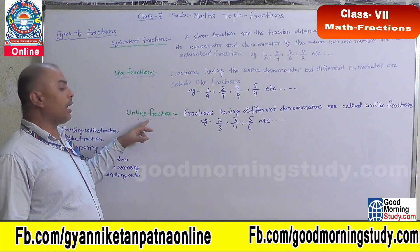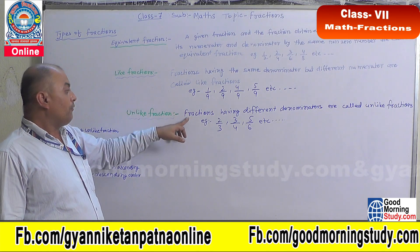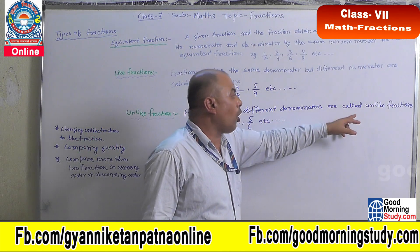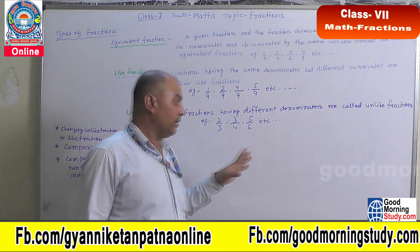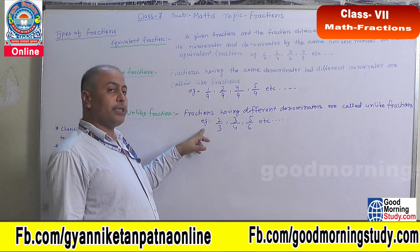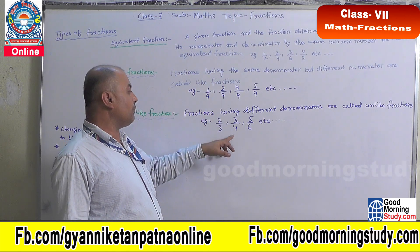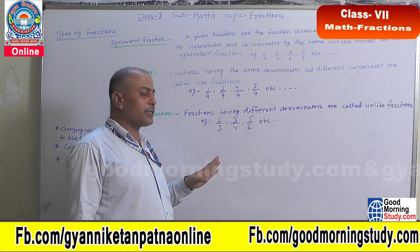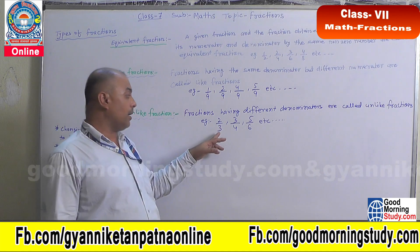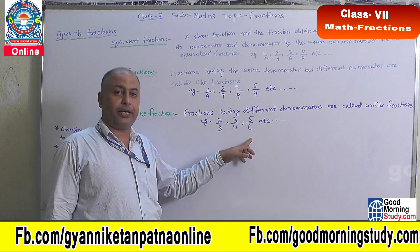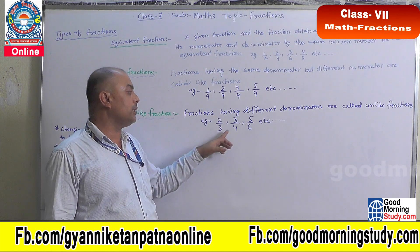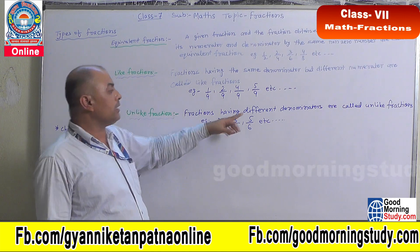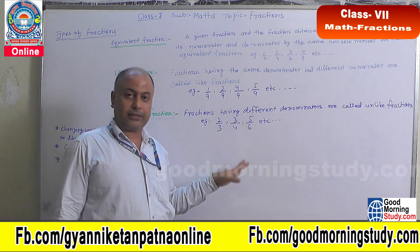The next topic is unlike fractions. Fractions having different denominators are called unlike fractions. For example, 2 by 3, 3 by 4, 5 by 6 are called unlike fractions. Why? Because the denominators are different — here the denominators are 3, 4, and 6, which are different. So these are called unlike fractions.